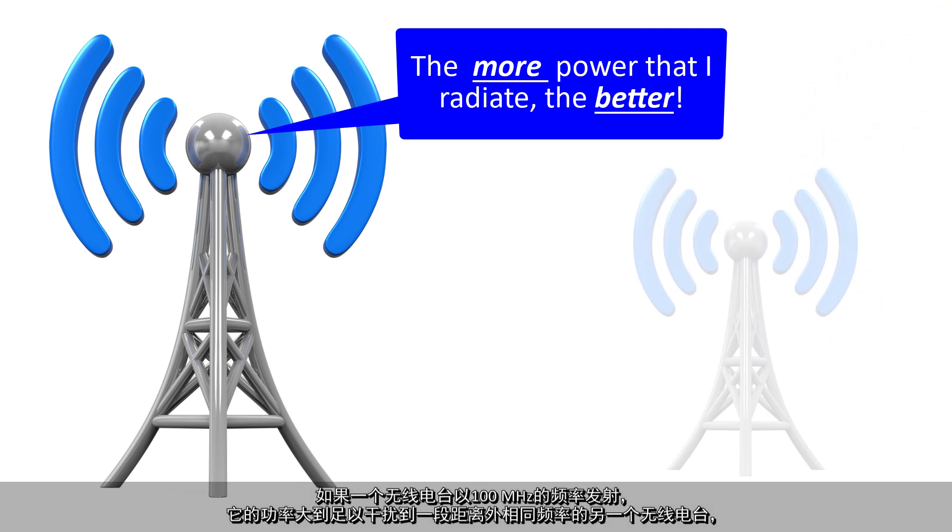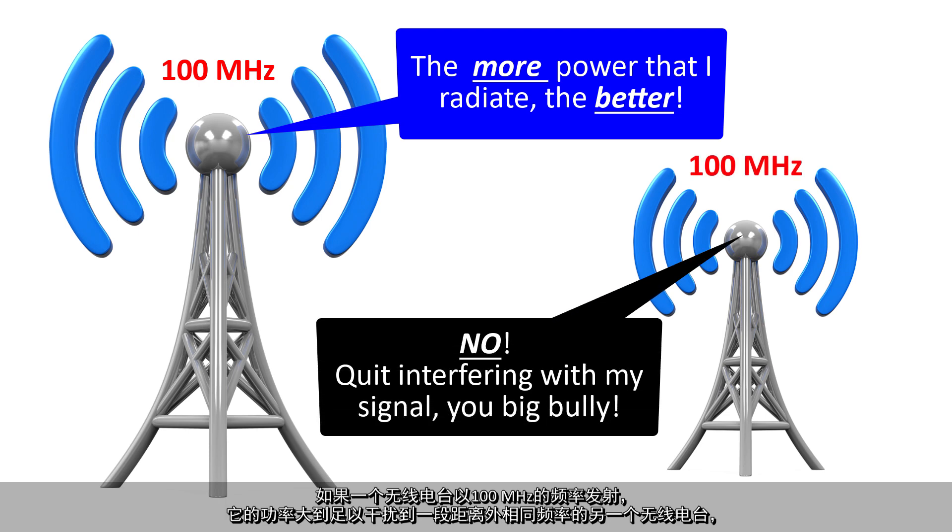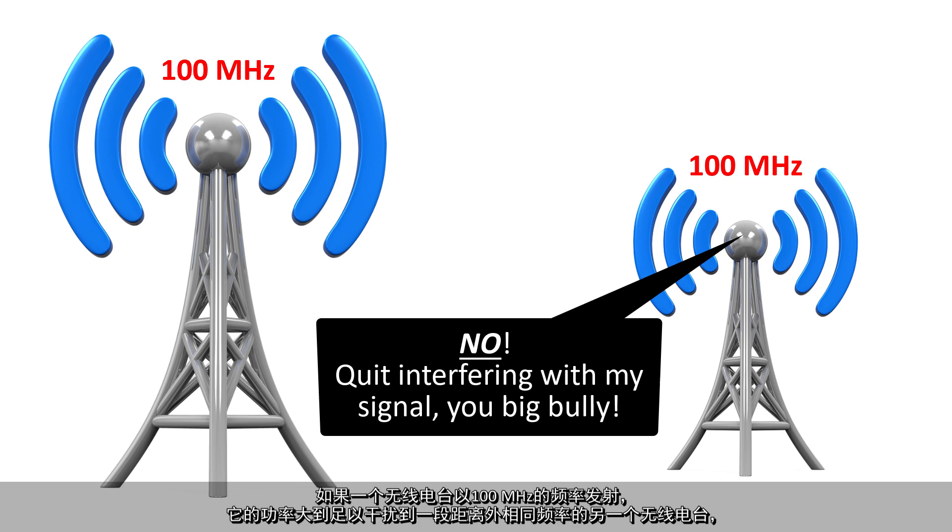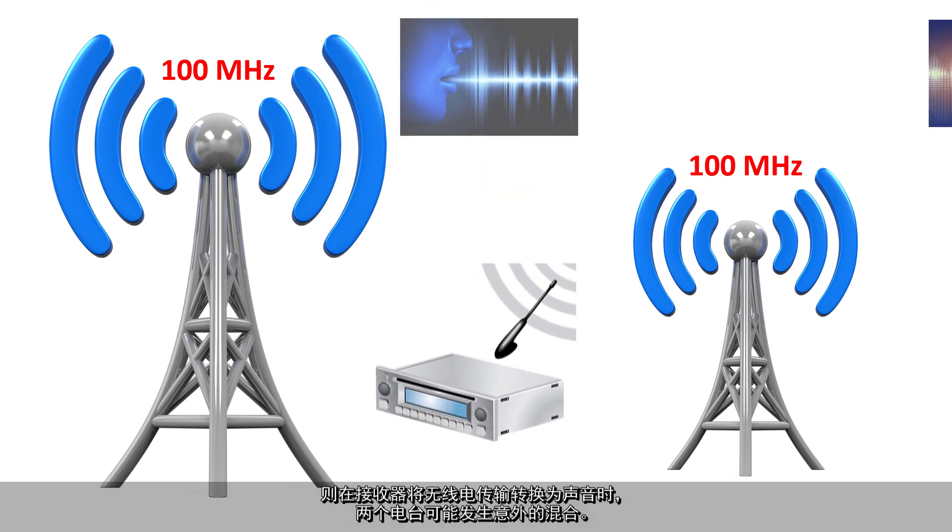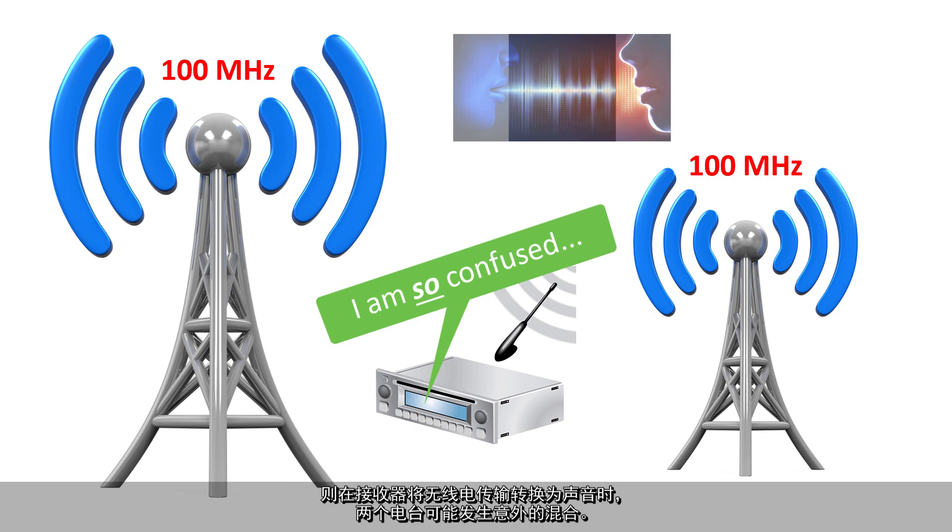If a radio station is transmitting at, let's say, 100 MHz with so much power that it interferes with another radio station of the same frequency some distance away, a receiver may produce an undesired mixture of the two radio stations when it converts the radio transmissions to sound.